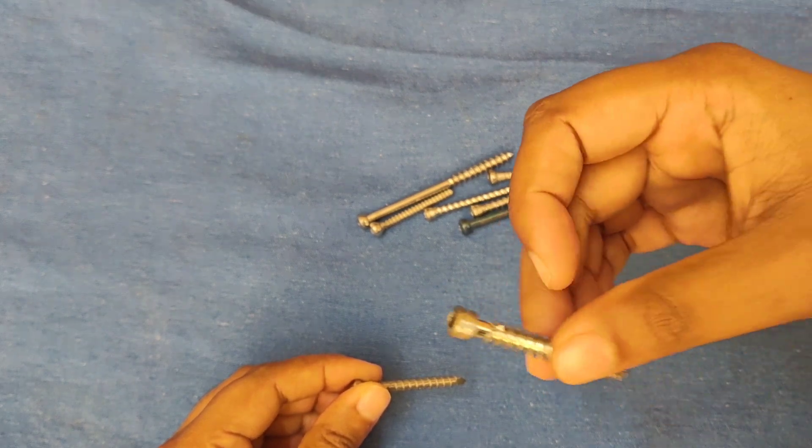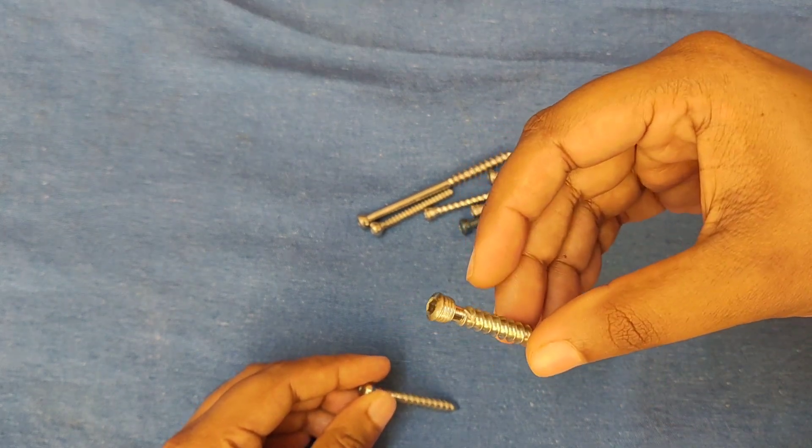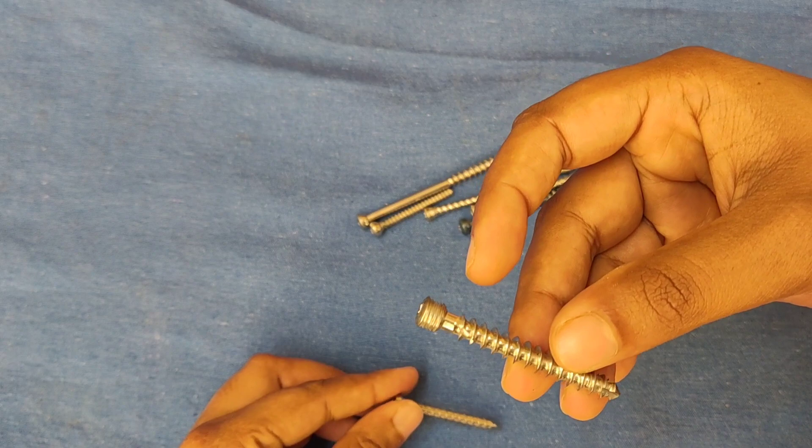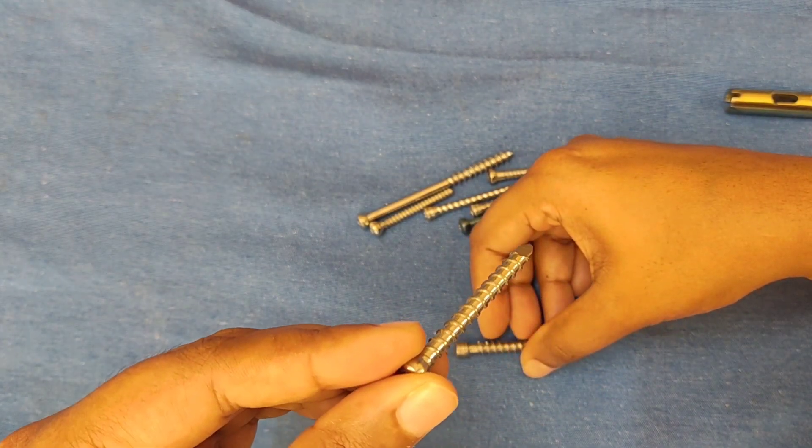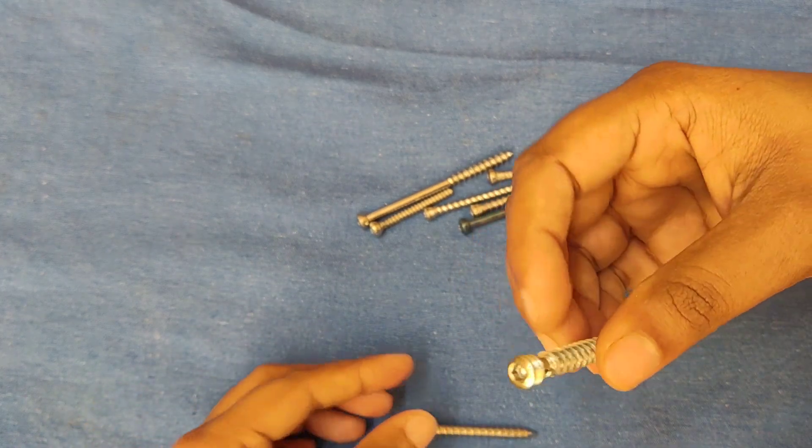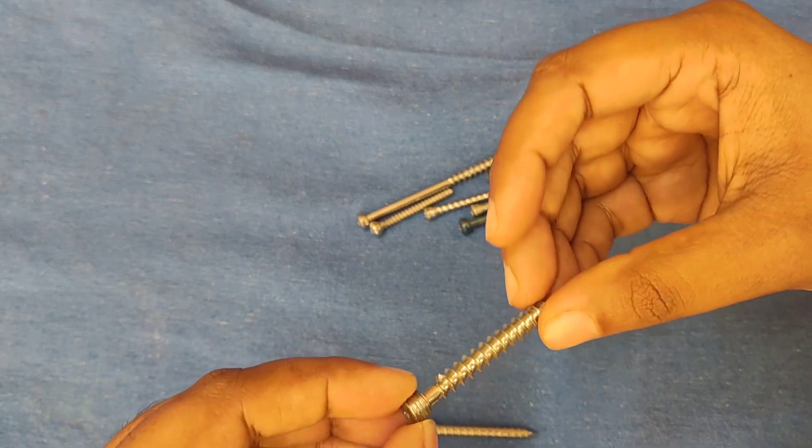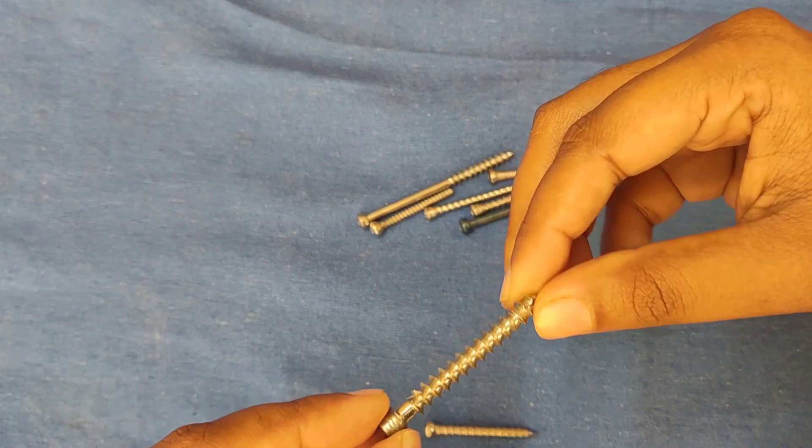This is a locking cancellous screw. Here you can see there are threads present over the head of the screw, and this thread will lock into the plate. This type of screw can be used at the metaphyseal area and also for osteoporotic bone.